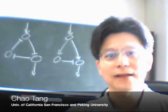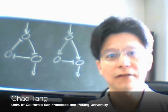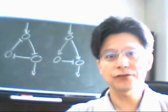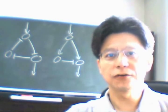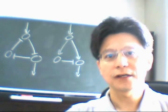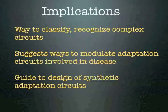It's fascinating to think that there are really only a few ways to achieve adaptation. Our work suggests that across highly diverse biological systems, evolution will repeatedly converge on the same solutions. This gives us hope that there may exist simple general principles in the apparently very complex biochemical networks. This work suggests ways in which we can classify and recognize functional modules within complex natural circuits. Since many diseases involve loss of proper homeostasis or adaptation, this work also suggests ways in which adaptation circuits could be modulated to restore function and treat disease. Finally, this work may provide a guide for the design of synthetic cellular circuits capable of adaptation.